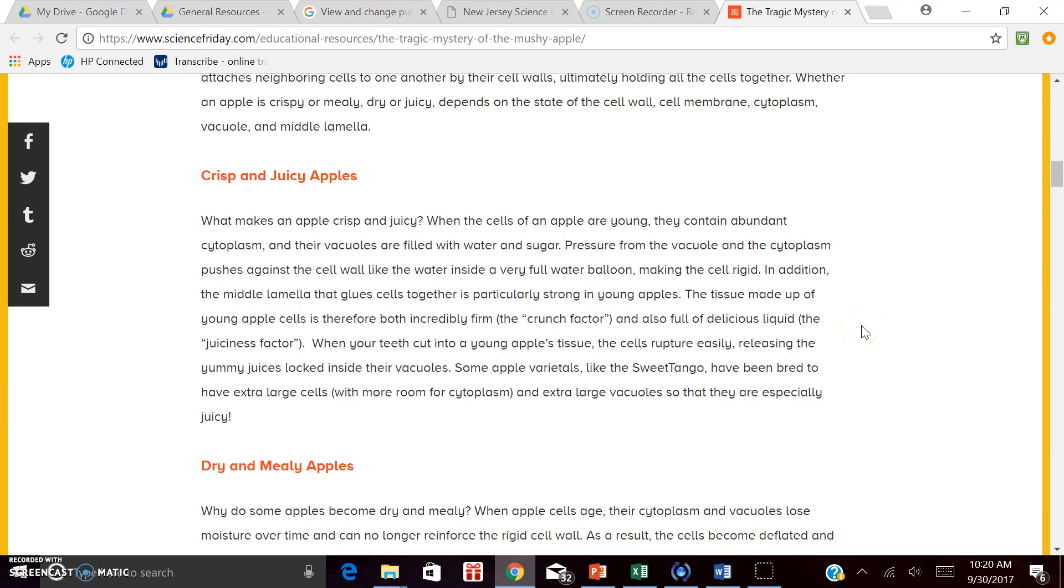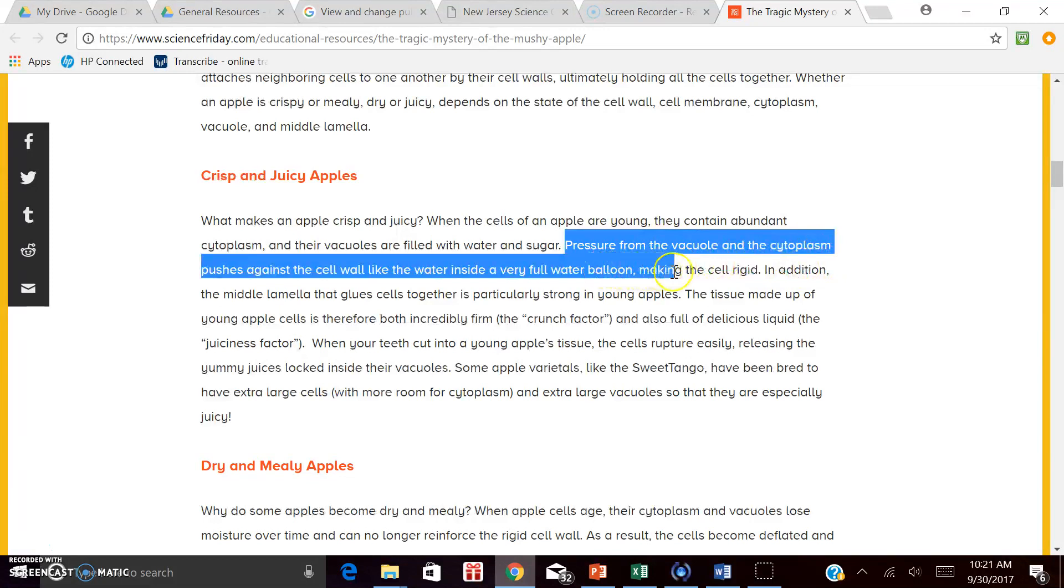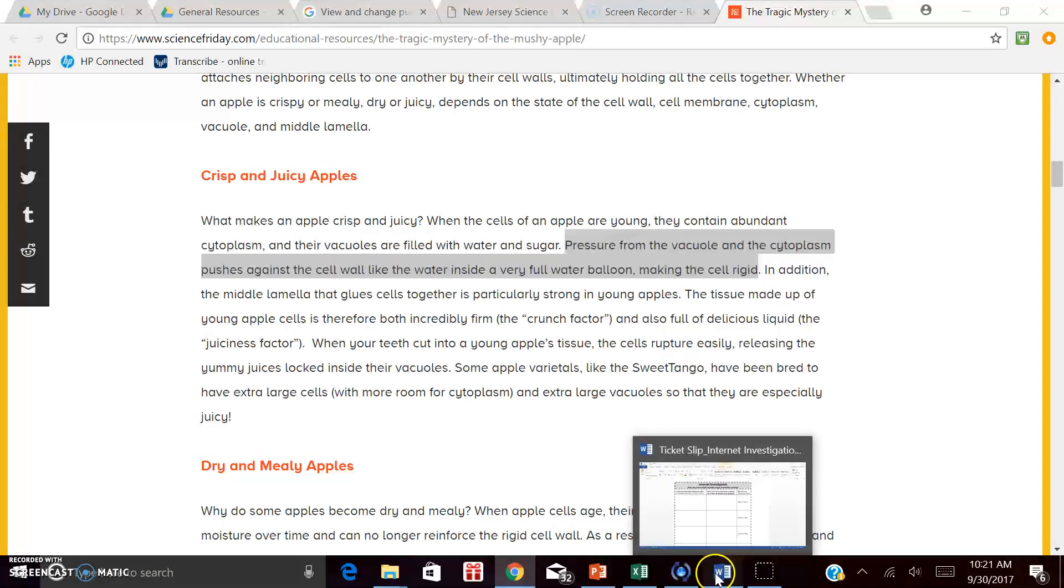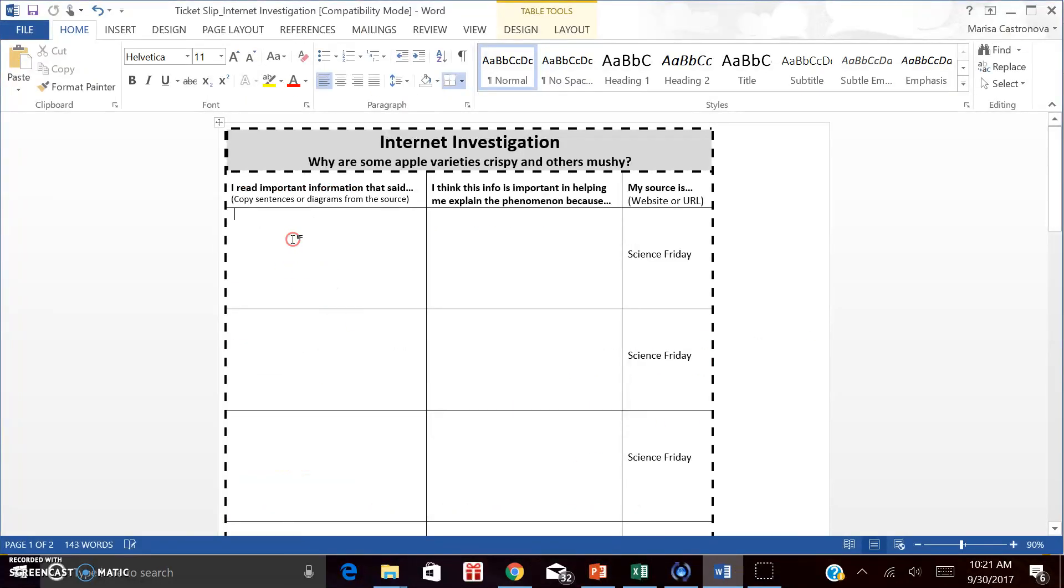Next, I'd like you to read the paragraph, Crisp and Juicy Apples. As you read, try to see if there's any new information that we can insert into our slip. After reading this paragraph, I found two sentences particularly important. This sentence was talking about pressure from the vacuole and the cytoplasm pushing against the cell wall, making the entire cell rigid. This is important in helping us understand the phenomenon. So I'm going to copy it and place it right here in my slip.